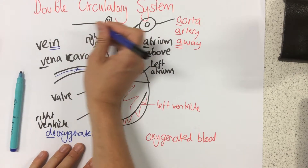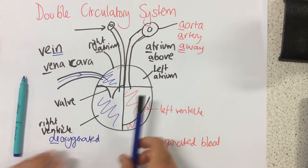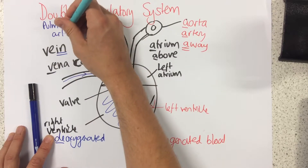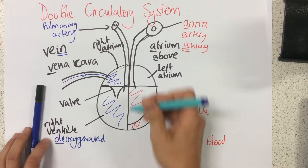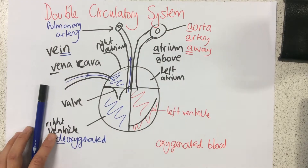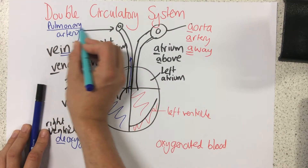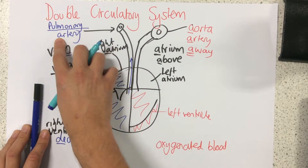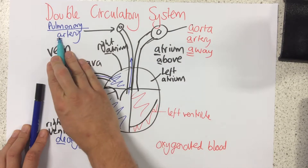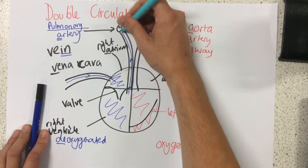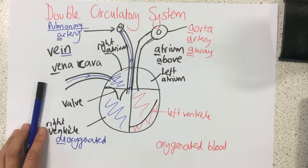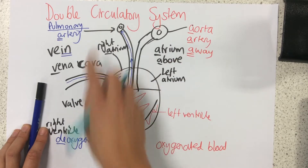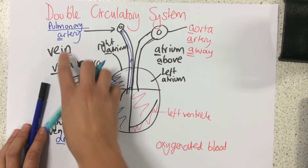This vessel is called the pulmonary artery. Whenever we see the word pulmonary, it's to do with the lungs. And artery — think of A for away. So the pulmonary artery takes deoxygenated blood to the lungs. If it's deoxygenated, we need to send it to the lungs to pick up oxygen — that's the pulmonary artery.